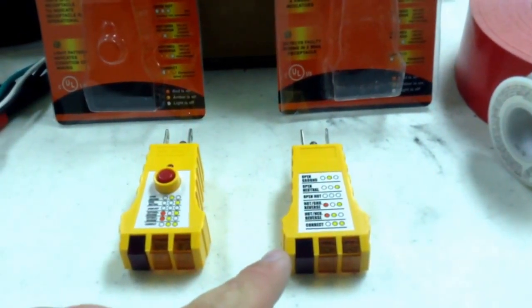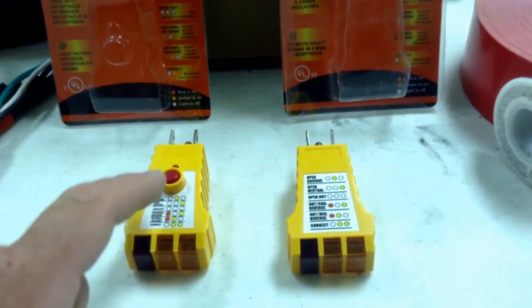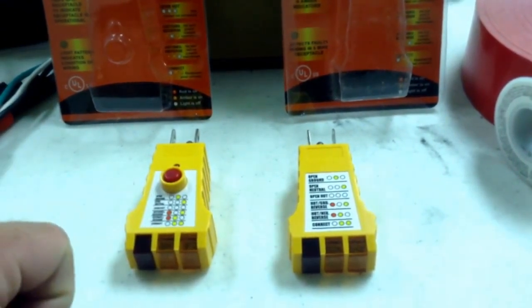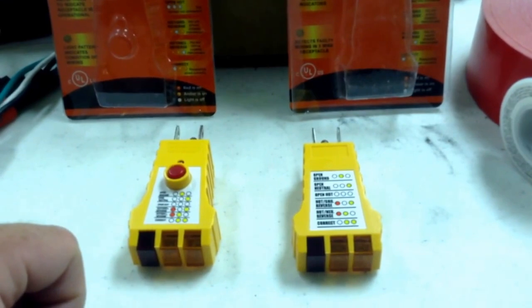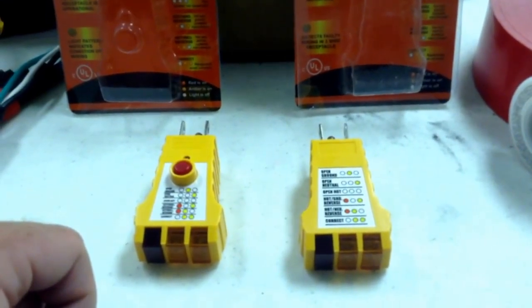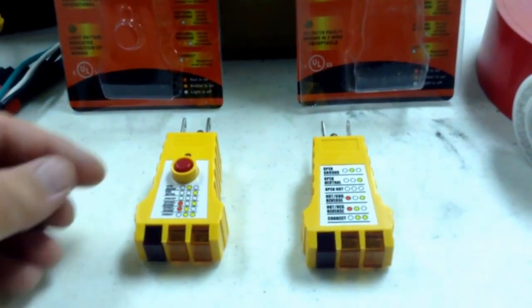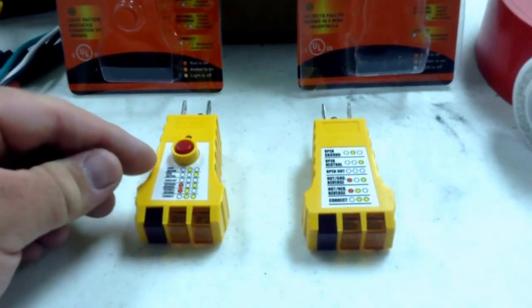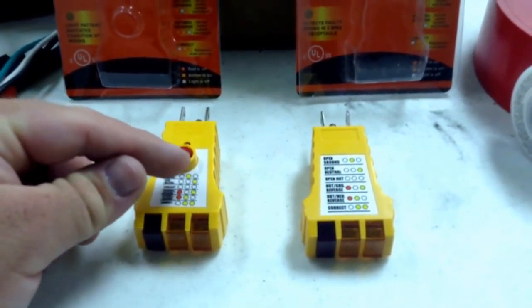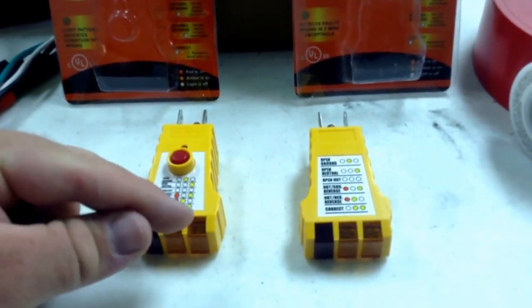It will tell you if the plug is wired correctly, but with this button on the top it will actually trip the GFI. So there's six modes that an outlet can be wired in and it shows you those six modes here. Each one indicates a light that is on the tester.